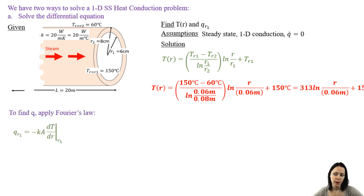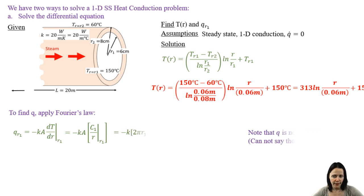And then to find the heat transfer rate, we can apply Fourier's law in cylindrical coordinates. We take the derivative of t with respect to r. Note that I put it in terms of c1 to simplify it. I also take note that the area at r1 is what I'm talking about.